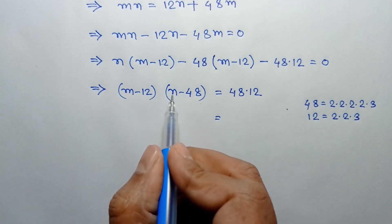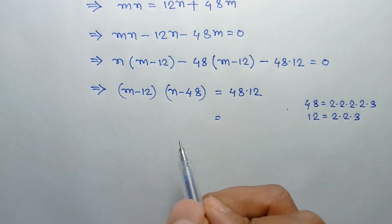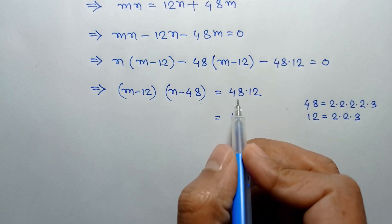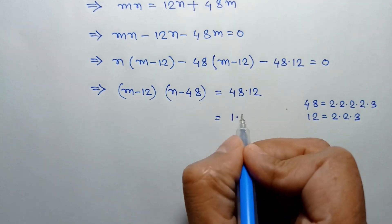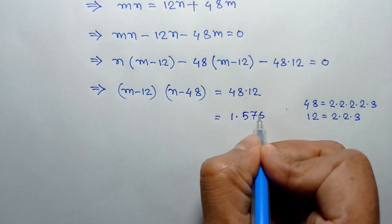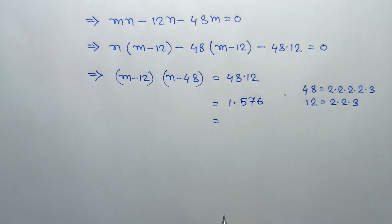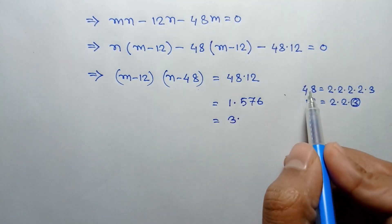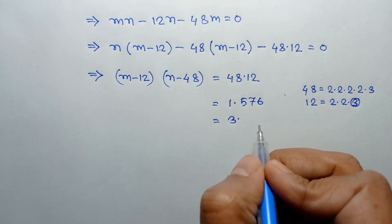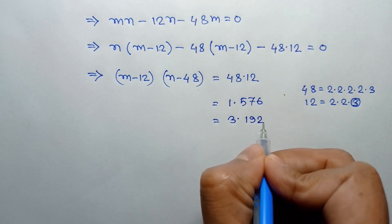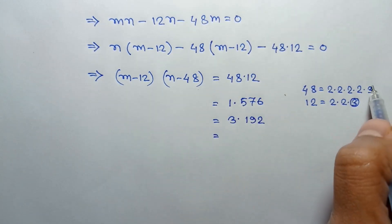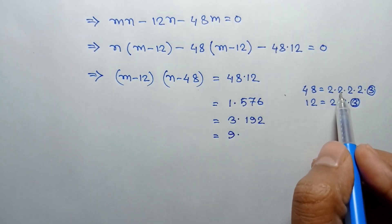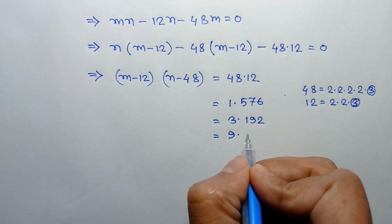Since n is an odd number, n minus 48 is also odd. So we look at the odd factors of 48 times 12, which is 576. One odd factor pair is 1 times 576. When one factor is 3, the other factor is 192. When one factor is 9, the other factor is 64.